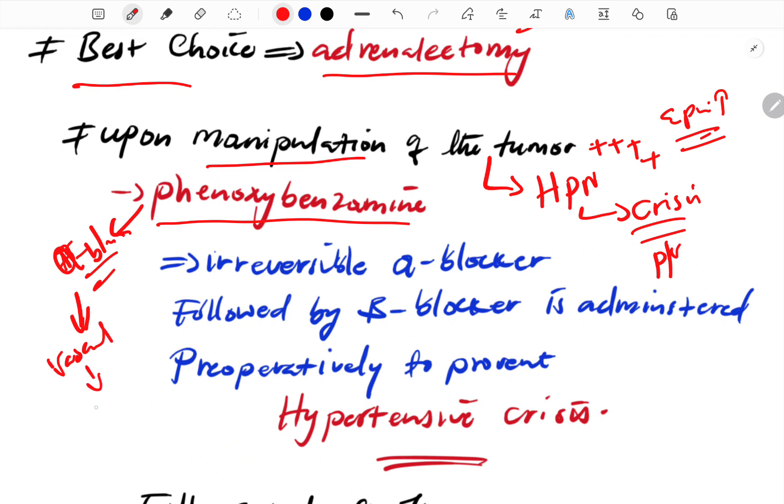The alpha blocker must be given before the beta blocker. If you give the beta blocker first without the alpha blocker, you can precipitate a hypertensive crisis. Start alpha blocker 10-14 days before surgery, then add beta blocker later.